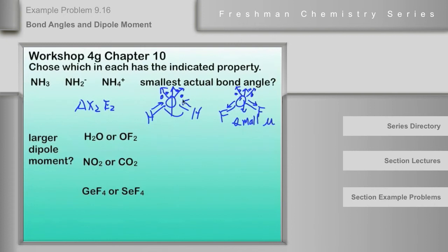Whereas water has a larger dipole moment because its bond vectors and its lone pair vectors cooperate to make one big vector going up. So the larger dipole moment will go for water. Questions on that one? I hope it makes sense to you.